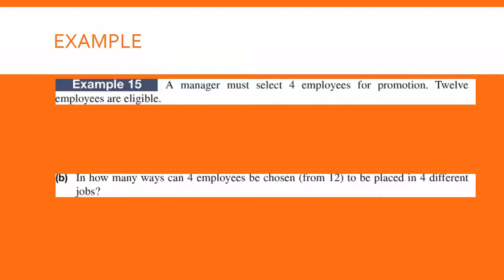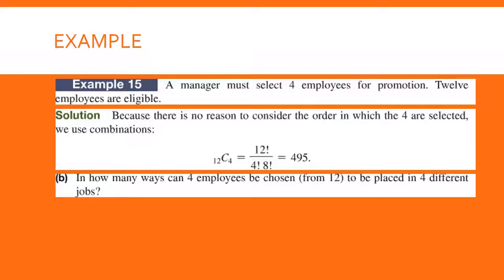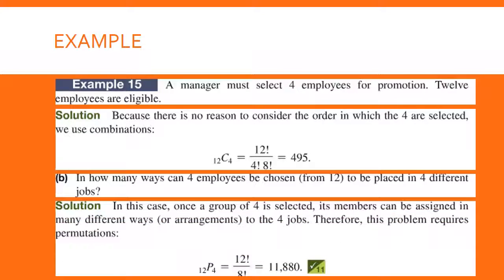Now try this example: a manager must select four employees for promotion from 12 eligible employees — how many ways can they be chosen? And how many ways can four employees be chosen to be placed in four different jobs? In part A, order doesn't matter — they just want to pick four employees for promotion — so you use a combination and get 495. In part B, order is important because you're assigning them to specific jobs, so you use a permutation and get 11,880.